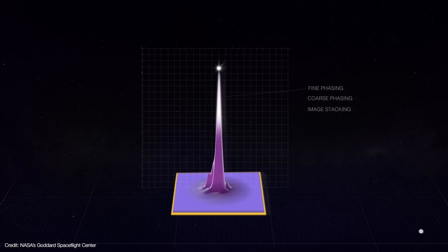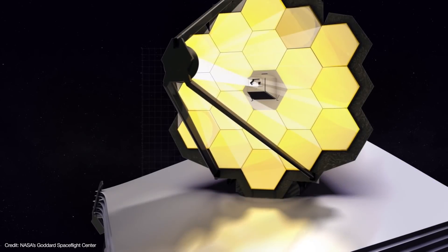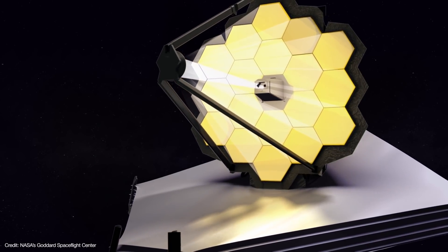At the beginning of phasing, actuators move the mirror edges by up to several millimeters at a time. By the final phasing, they're moving just a few nanometers. That's just one ten-thousandth the width of a human hair.